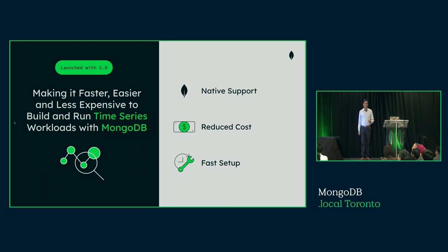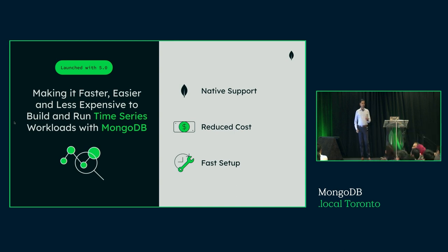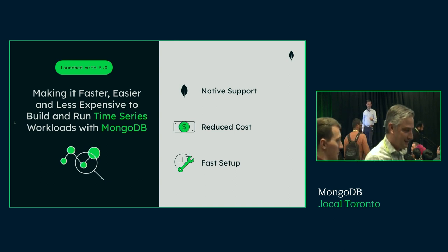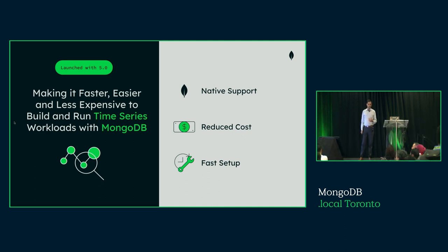Our goal at MongoDB has always been making a developer's life easier to work with data. With the time series capabilities introduced in 5.0, we wanted to make it easier, faster, and less expensive for developers to store and process time series data within MongoDB. With 5.0, we introduced what we call native support for time series in MongoDB.